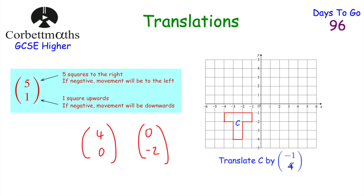Think about how that's going to translate shape C and what you would do to move it. Because it's (-1, 4), we're going to translate it by moving it one square to the left and four squares up. The negative means left, so it's one to the left, and four means four up.